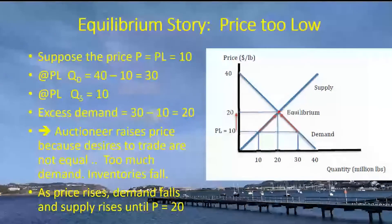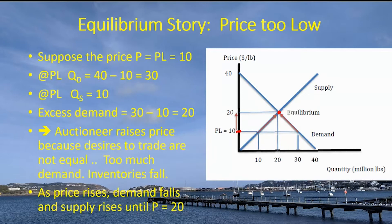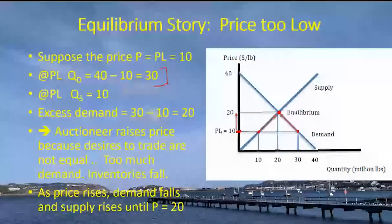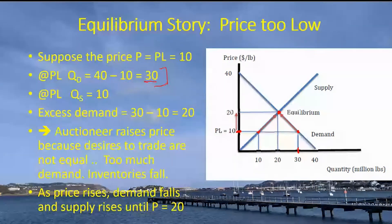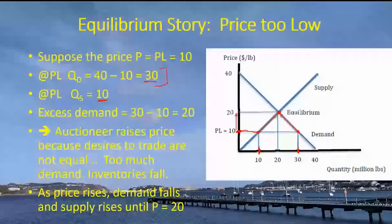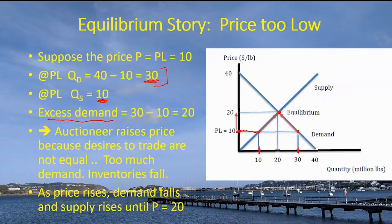The first equilibrium story: the price too low story. We start out with the equilibrium where supply and demand are equal, but we're going to imagine starting with a price PL equal to 10. The quantity demanded can be read off the demand curve — that's going to be equal to 30 units. But the quantity supplied is only going to reach a level of 10. Take the price over to the supply curve, carry it down, we get a value of 10. So quantity demanded is 30, quantity supplied is 10.